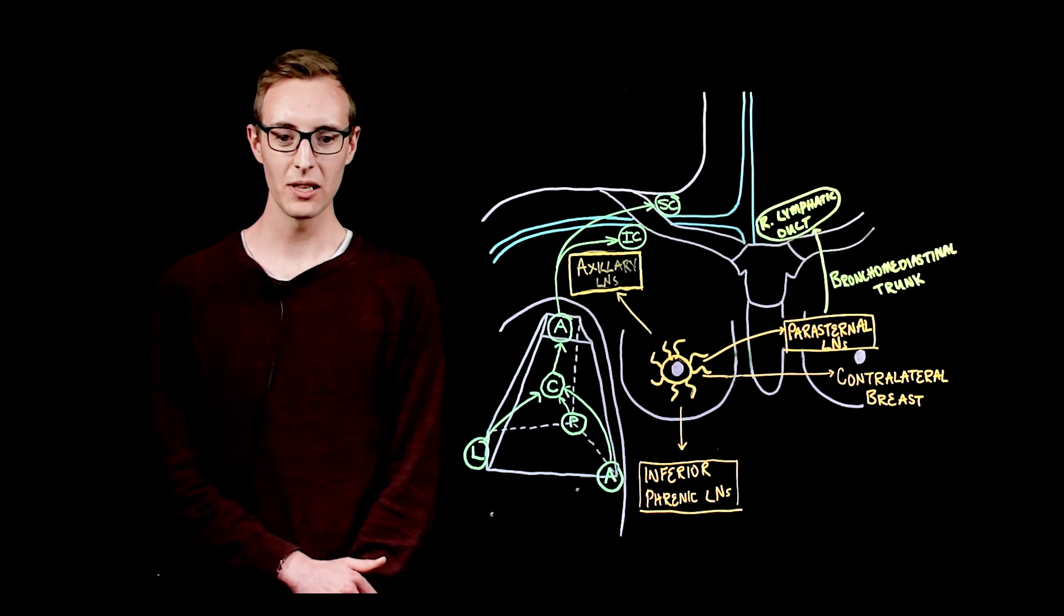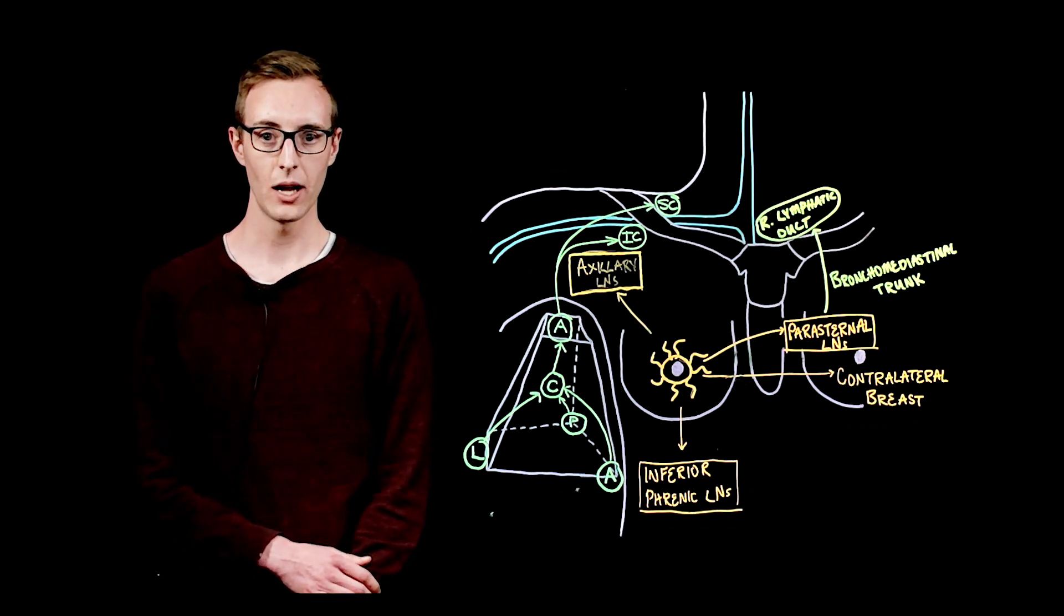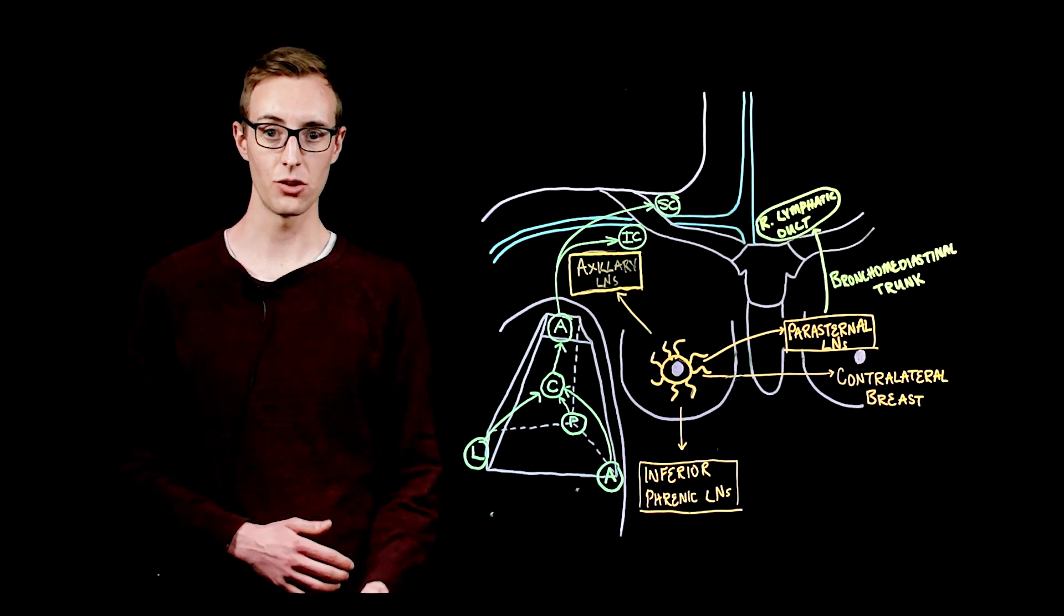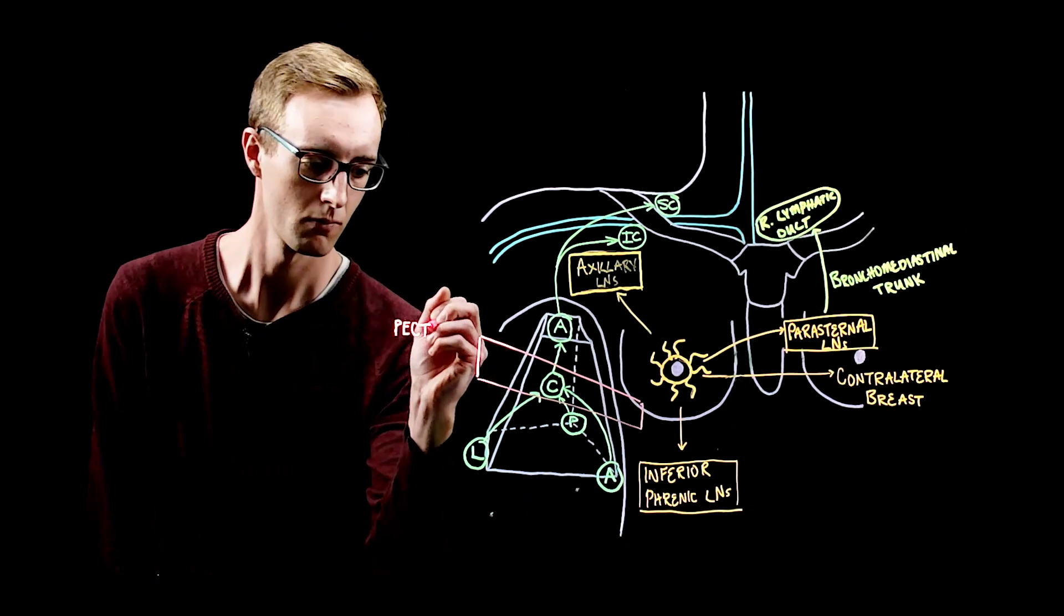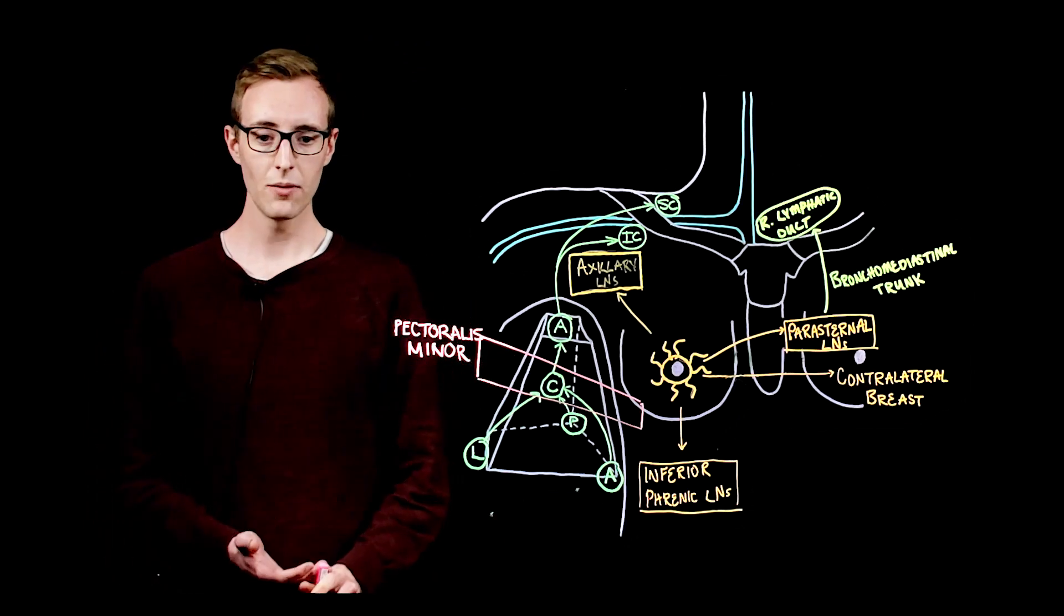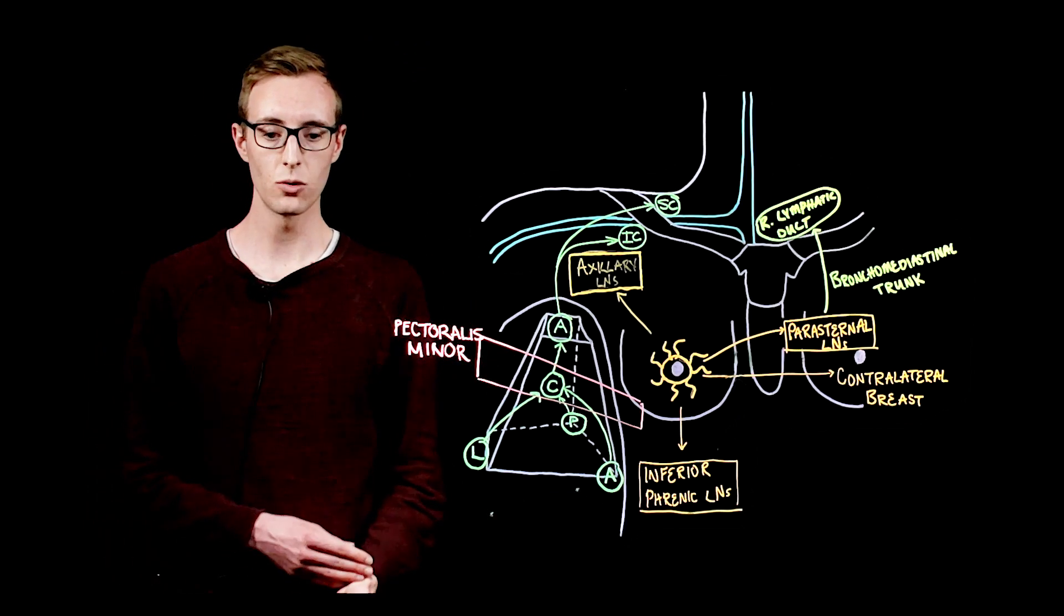Surgically the axillary lymph nodes are divided into three levels and this division is on the basis of their relationship to the pectoralis minor muscle. There are three levels of nodes: level one, level two and level three.